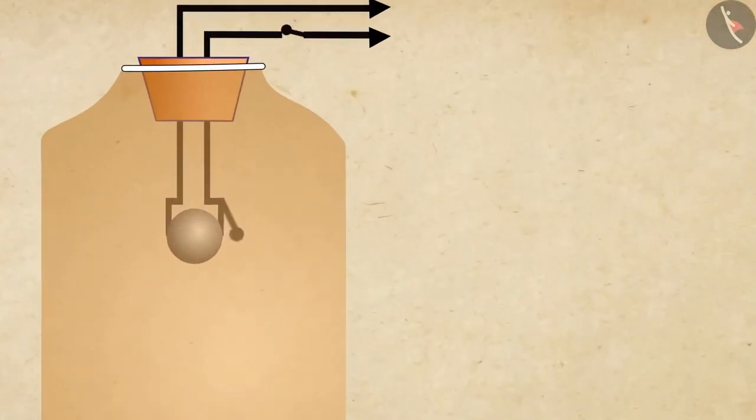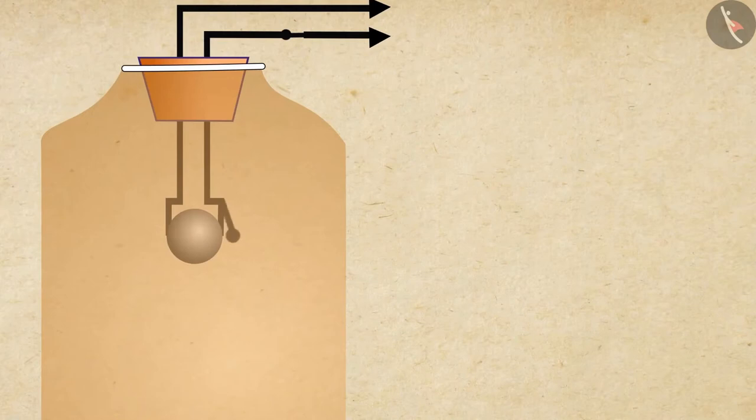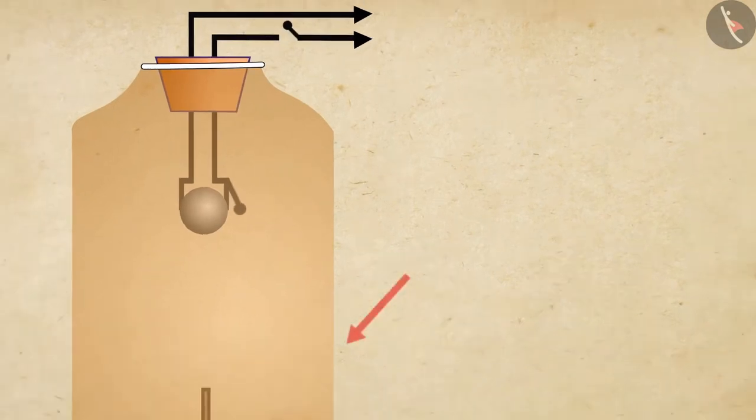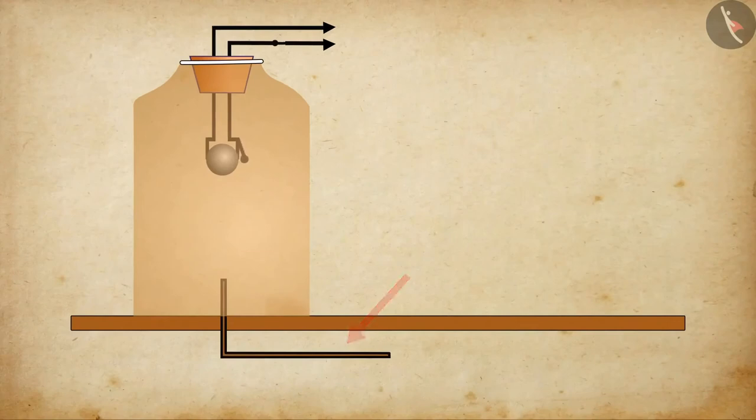Then, press the switch and you will be able to hear the sound of the bell. Now, start the vacuum pump. You will notice that the sound of the bell gradually becomes fainter.